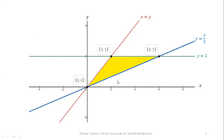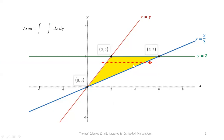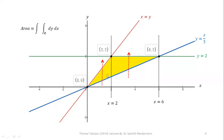Now, what happens if we choose x as the inner variable? For the limits of x, we pass a horizontal arrow through the region. Whether the arrow is in the upper portion, the middle, or the bottom of the region, in all cases the arrows enter through the boundary where x = y and exit through the boundary where x = 3y (from the equation y = x/3). So there is no change in the limits, unlike the previous case where the limits varied. Our ultimate target is to calculate the area of this shaded region.